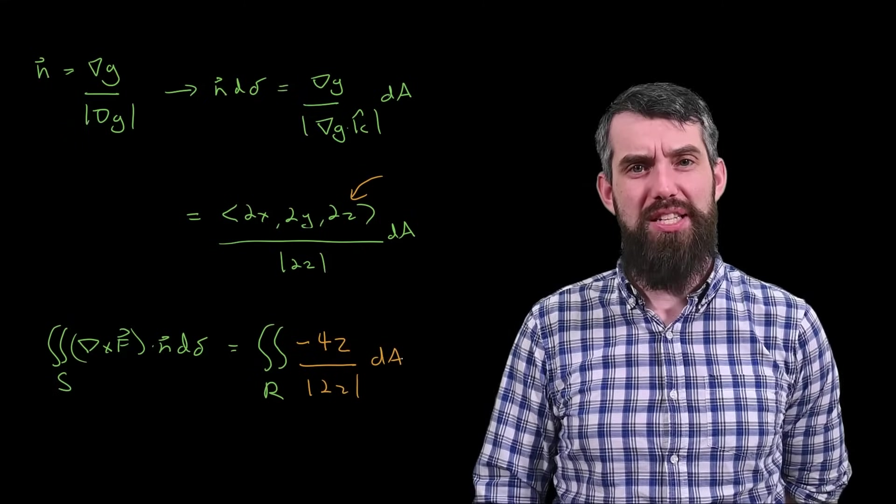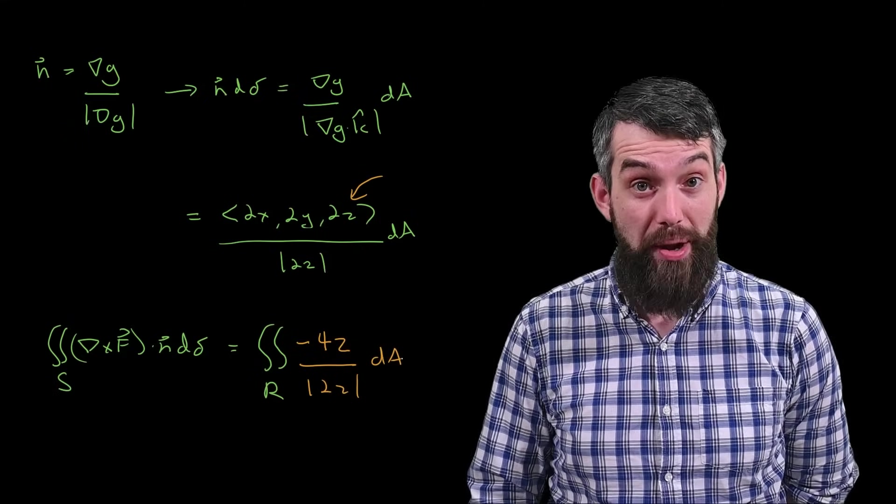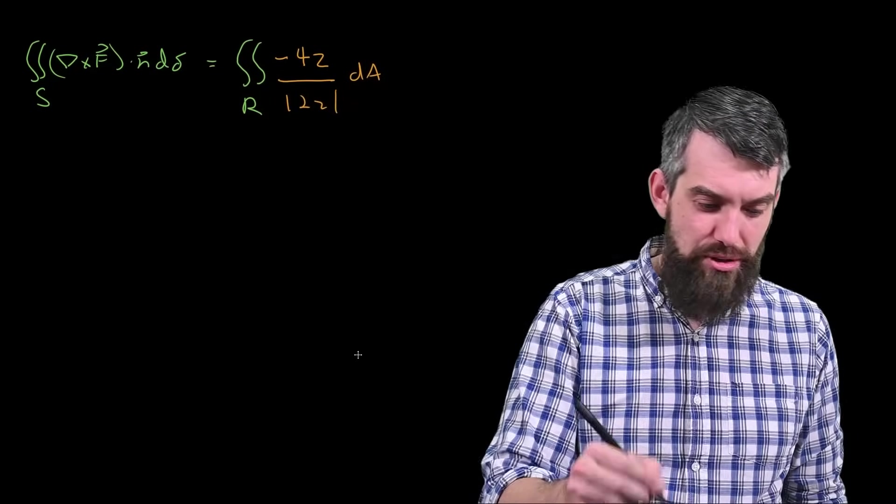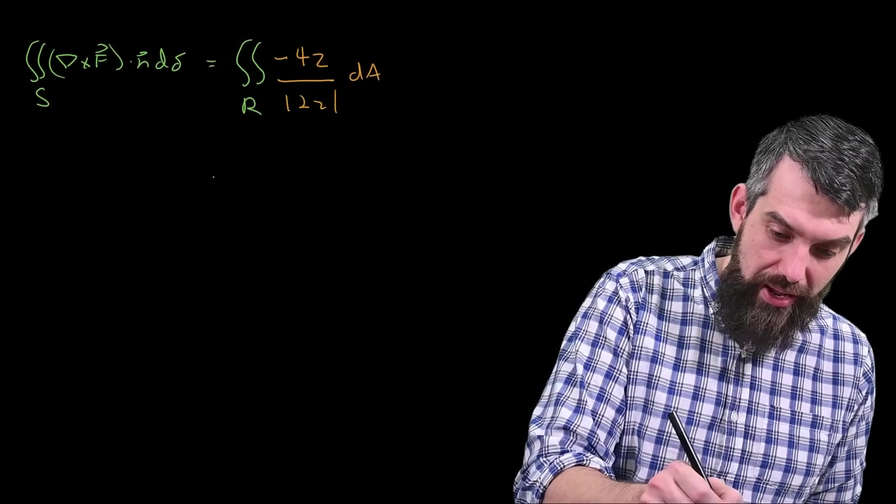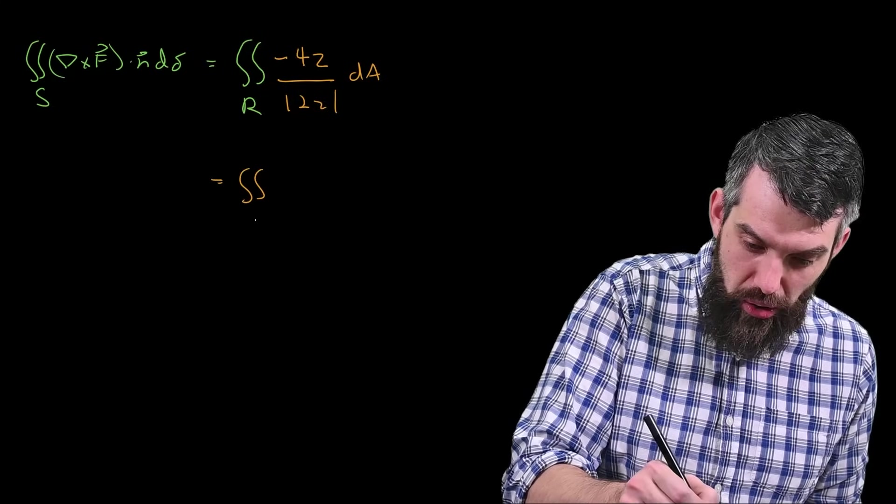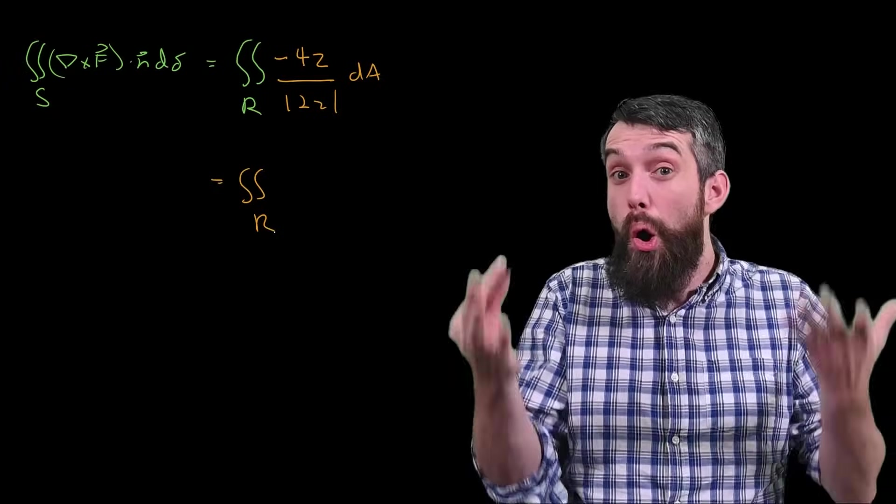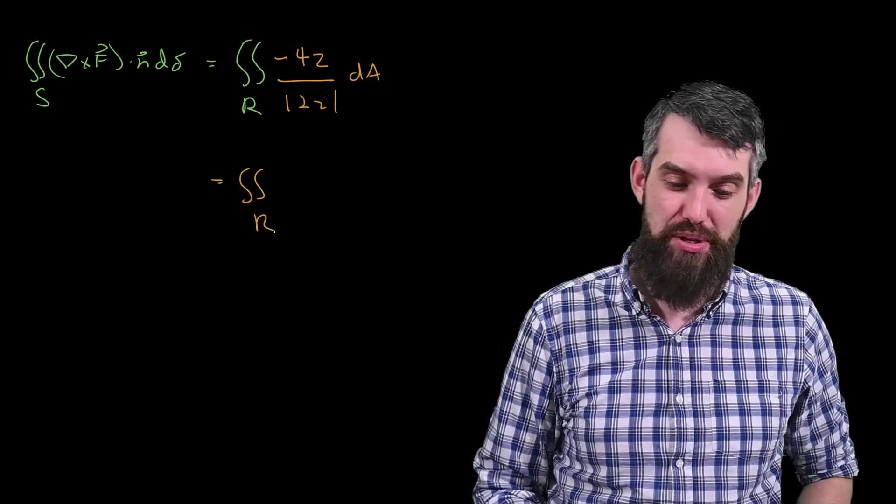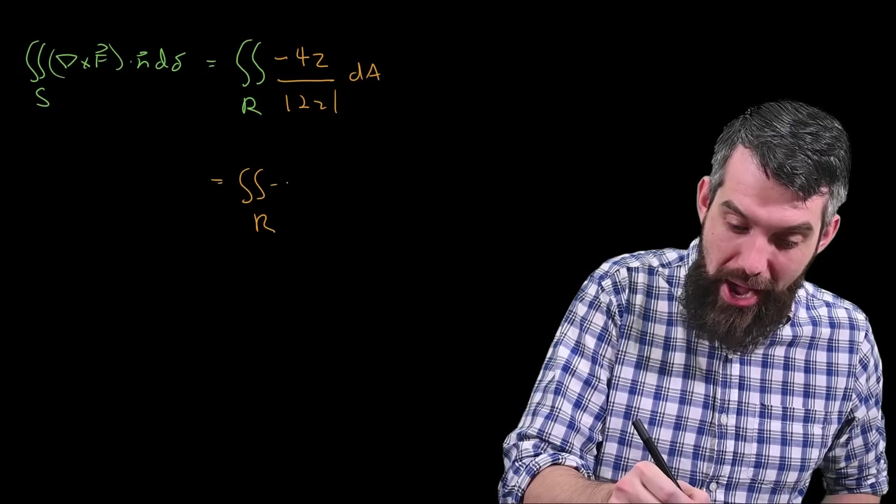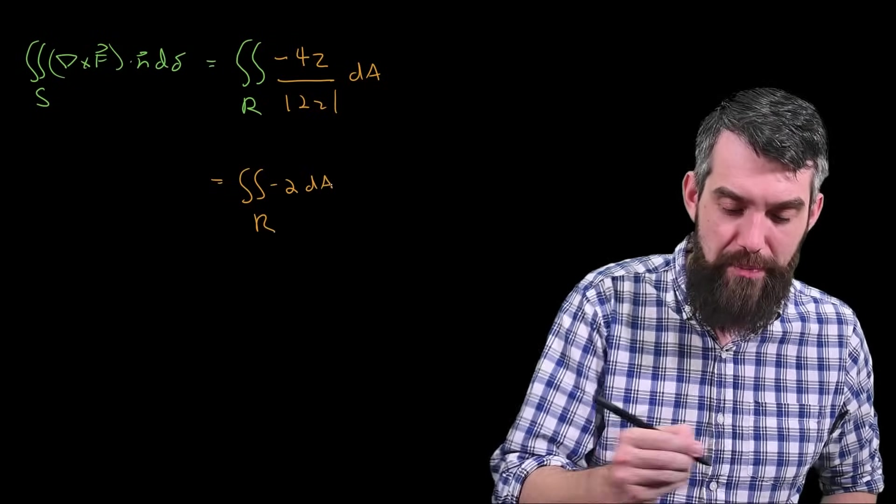And I still haven't figured out what the limits of my integration are, I'll do that in a moment. And then, now it's just a computational question. This integral here is, well, let's do it again, the double integral over the region, minus 4z divided by 2z, z was always assumed to be positive, so I can drop those absolute value signs. It's just going to be a minus 2 times d-a.